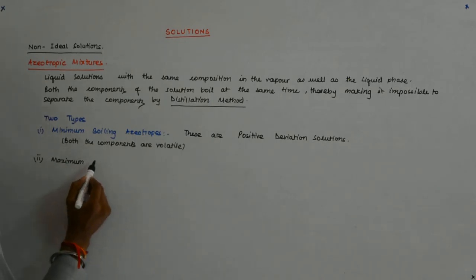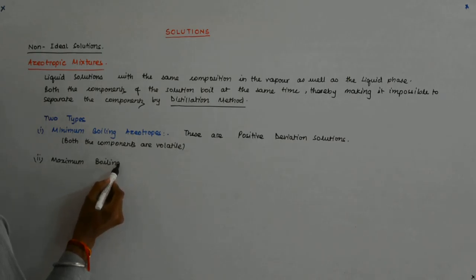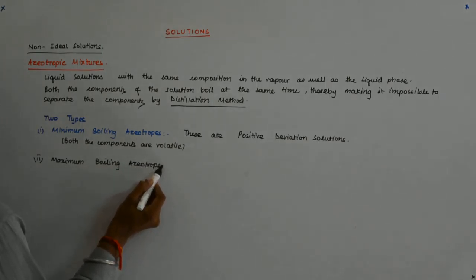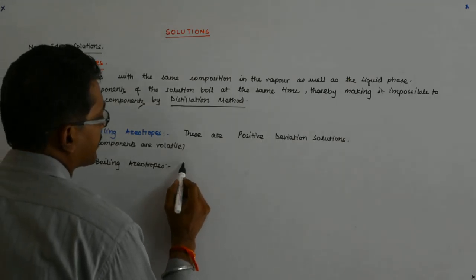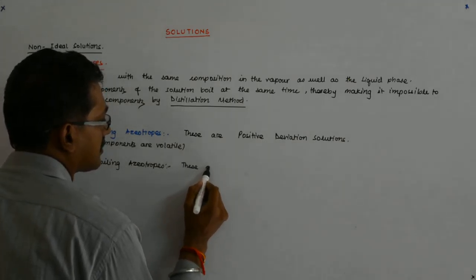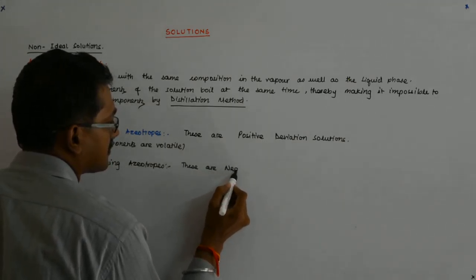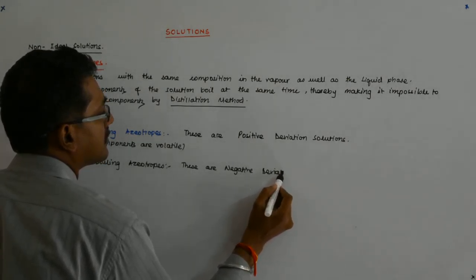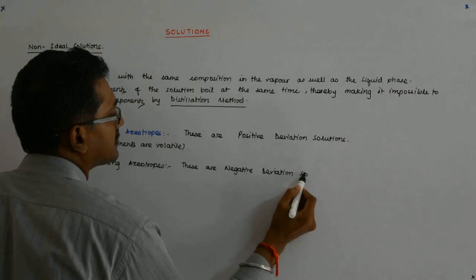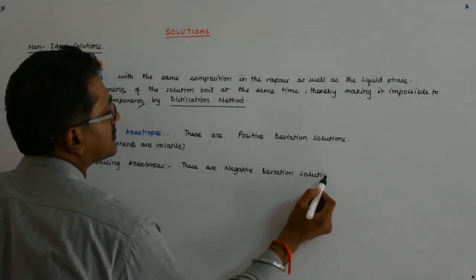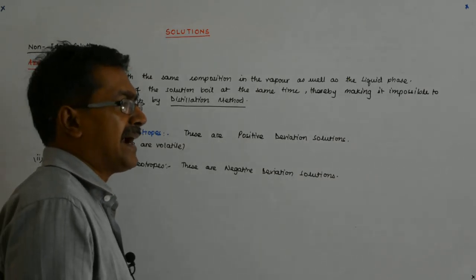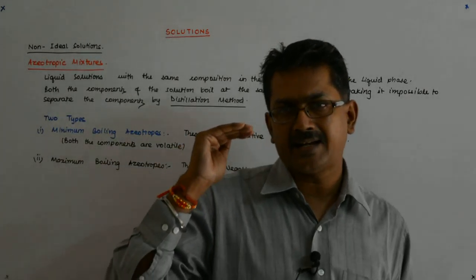So positive deviation solutions will give you a minimum boiling azeotrope. And in a similar manner, maximum boiling azeotropes — for those, you will have to heat it more — so these are negative deviation solutions.